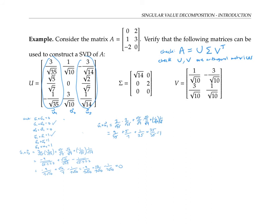I'll leave it to you to verify that V is an orthogonal matrix. In other words, if these are the columns v₁ and v₂, I'll leave it to you to check that v₁ dot v₂ is zero, and that v₁ dot v₁ and v₂ dot v₂ are both one.